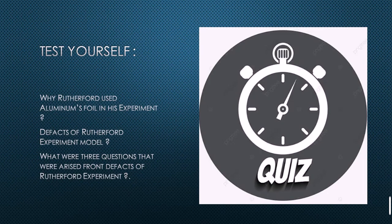Here is a time to test yourself. Why was the gold foil used in Rutherford's experiment? What were the defects of the Rutherford experiment? What are the three questions that arose from the defects of the Rutherford model?